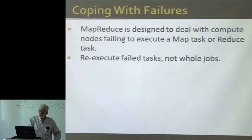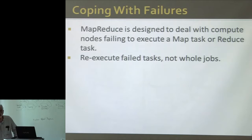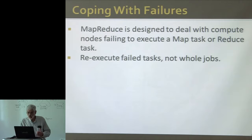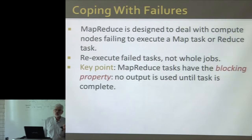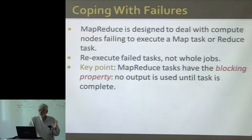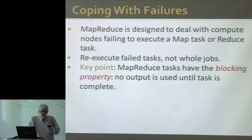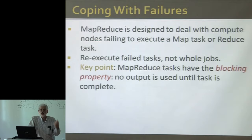There's a property of MapReduce and other systems like Spark or Flink — the blocking property — which is: you can't use the output of a task until the task is complete. That's what lets MapReduce recover from failures. If a task fails before it's finished, you don't have to worry about whether somebody's consumed part of its output or not. This is the thing that lets you restart a task rather than restart an entire job.